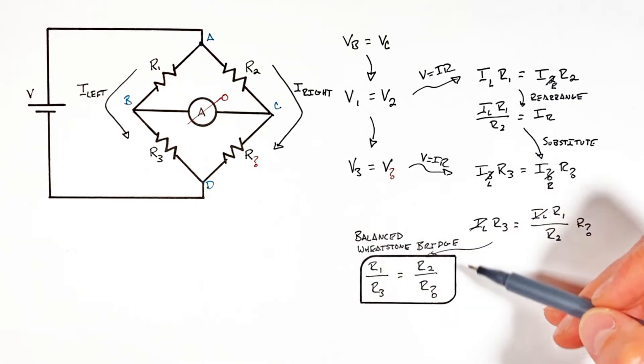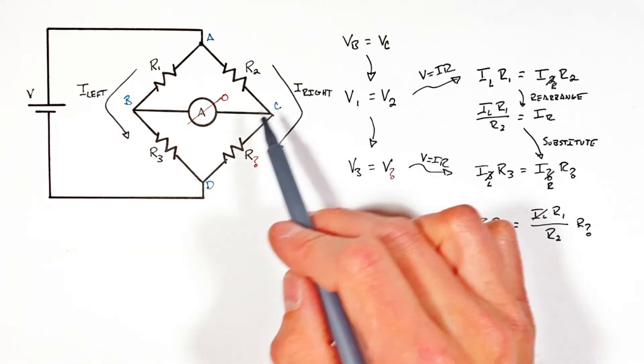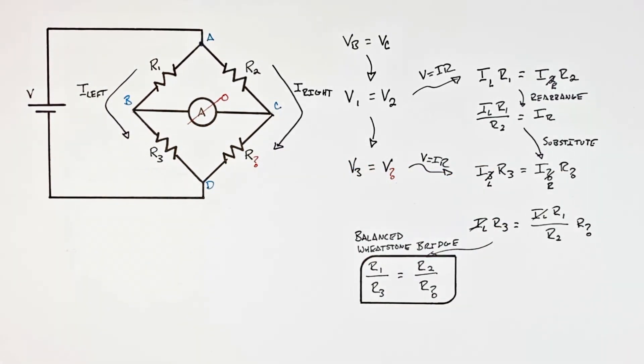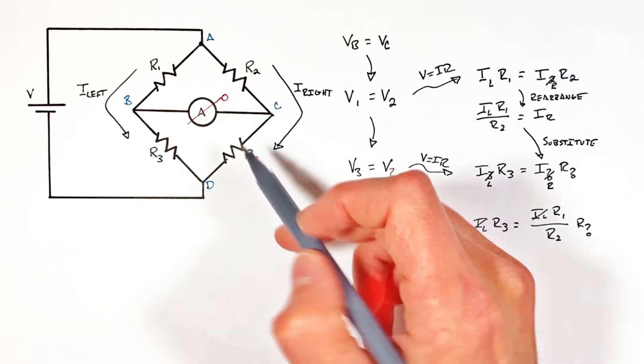And that is the situation where points B and C are at the same potential such that we get no current flow across the bridge.